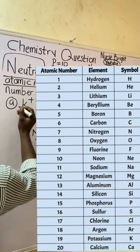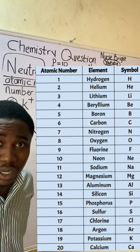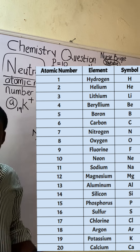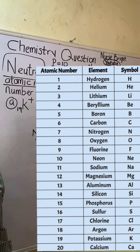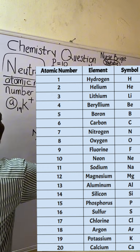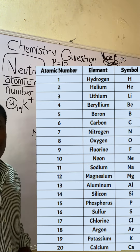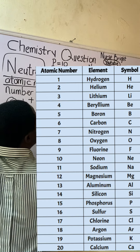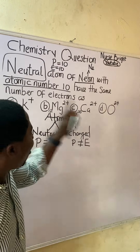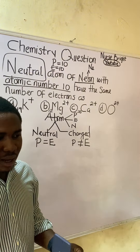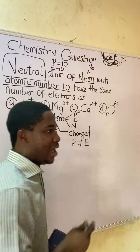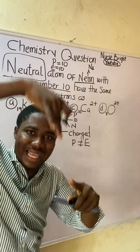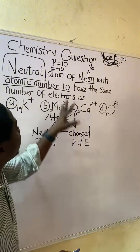Potassium is number 19 in the periodic table. I'll put the atomic numbers on screen so you can follow. Magnesium is number 12. Calcium is the 20th element, so calcium is number 20. Oxygen is number 8 — hydrogen, helium, lithium, beryllium, boron, carbon, nitrogen, oxygen — that's number 8.